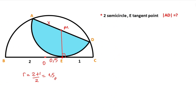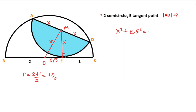I want to represent these three parts as x. Then if we connect these two points, let's call that length y. For this triangle, if we apply the Pythagorean theorem, we get: x squared plus 0.5 squared equals y squared.